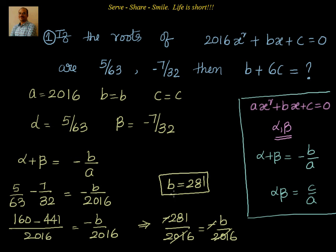So let's remember that b = 281. We will write it somewhere, b = 281. What's the next one? We have to find out c. Then I can directly say what is b + 6c. So let's try to find out c now.